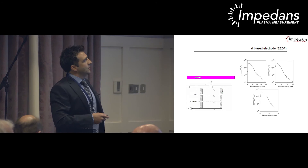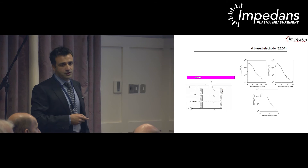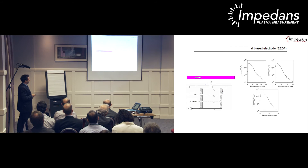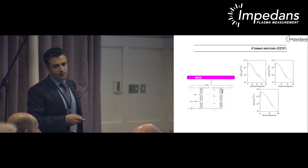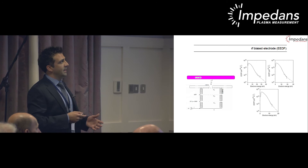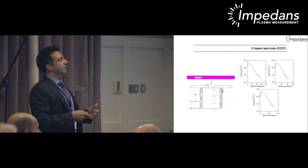A measurement of the electron energy distribution crossing the sheath is also possible. Comparing the electron energy distribution measured with a Langmuir probe to that measured with the retarding field analyzer shows the RFEA extends to much higher energies. However, the RFEA does not collect the low energy portion of the electron energy distribution function, since low-energy electrons generally cannot cross the sheath barrier in front of the analyzer.